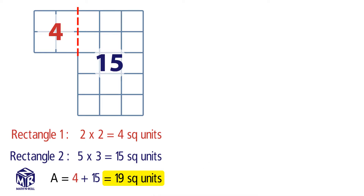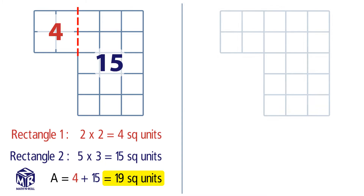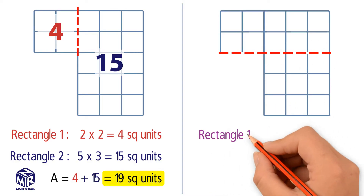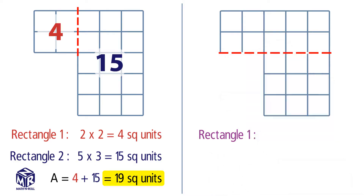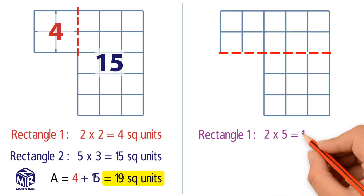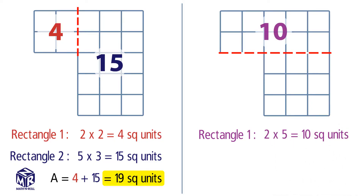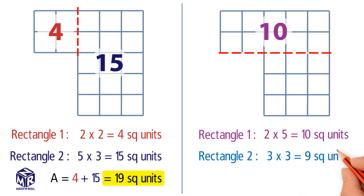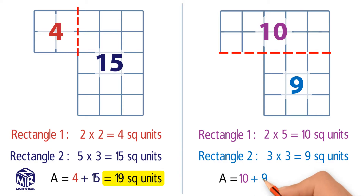We can break up the same figure using a different method. Last time we used a vertical line to break apart the model; now let's use a horizontal line. The first rectangle is a 2 by 5 rectangle, so we multiply 2 times 5 to get 10 square units. The second rectangle is a 3 by 3 rectangle, so we multiply 3 times 3 to get 9 square units. 10 plus 9 equals 19 square units.